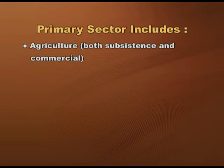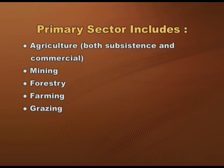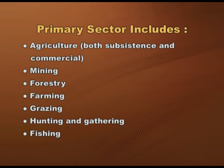In the primary sector, we produce a commodity by exploiting natural resources. Activities associated with the primary sector include agriculture — both subsistence and commercial — mining, forestry, farming, grazing, hunting and gathering, and fishing. At times, the packaging and processing of raw material associated with this sector is also considered part of the primary sector. This sector is also called the agricultural sector.